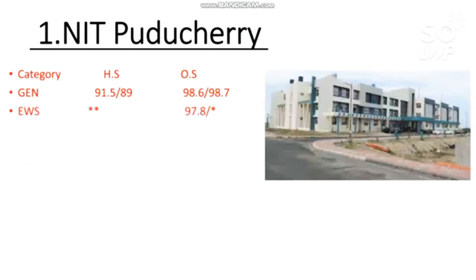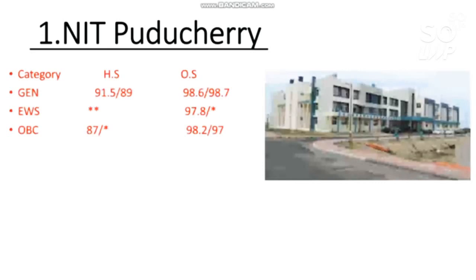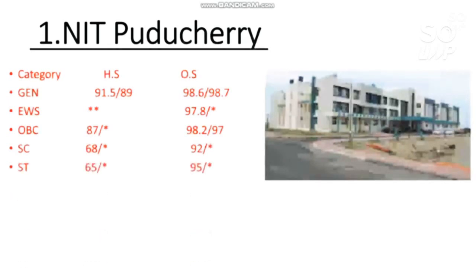For EWS, there is no seat reserved for home state candidates. Wherever you find a star mark, that means that category is not reserved in that particular NIT. For other state male students, 97.8 percentile is required to get CS in this NIT, and no seat for female. For OBC: 98.2 and 97 percentile for other state male and female. For SC: 92 percentile, and for ST: 95 percentile.